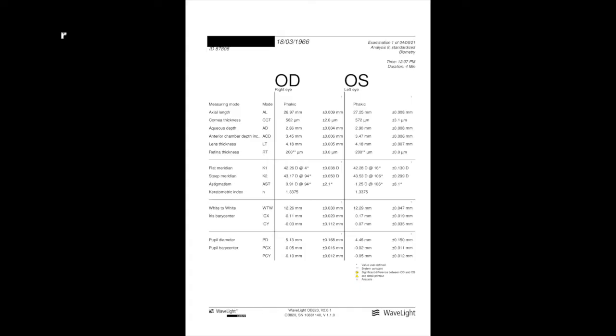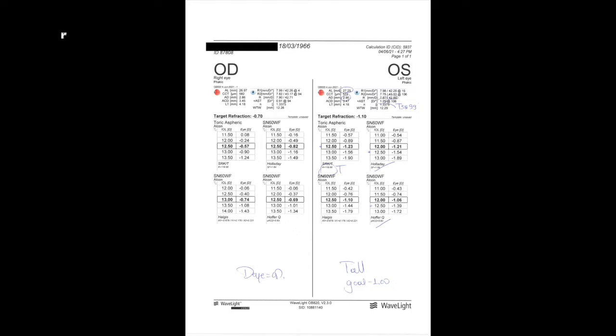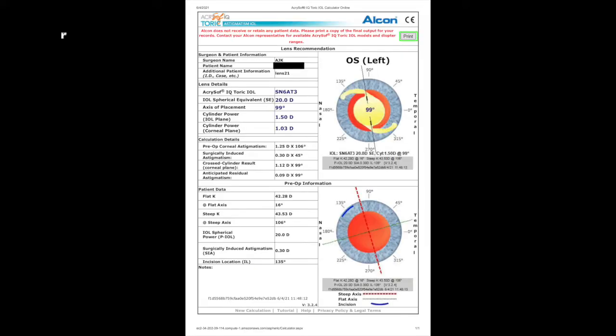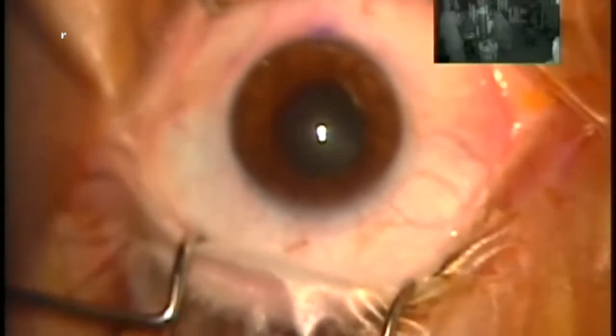We're going to go to our IOL calculator. Since the anterior chamber depth is at 3.47, this is a very high myope — you can see the actual axial length is over 26. We're going to go with the Haigis-Q formula on the left eye with a goal of minus one myopia. This is the Alcon AcrySof Toric Calculator that also takes into account my incision, which is invariably at the 10 o'clock position. All the preoperative data and IOL calculation are seen here.